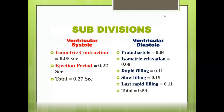Ventricular systole is subdivided into isovolumetric contraction and the ejection period. Ventricular diastole is subdivided into proto-diastole, isovolumetric relaxation, rapid filling, slow filling, and last rapid filling phase.